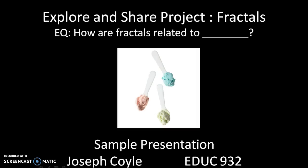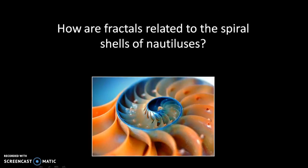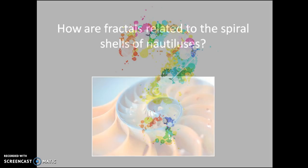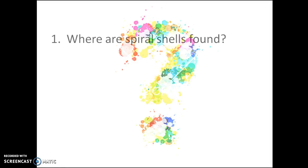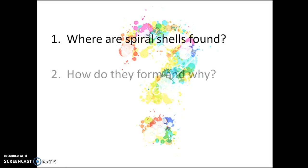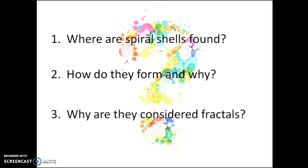It is your job to fill in the blank. One of the coolest creatures in the world is the Nautilus, because of its unique spiral shell. The spiral shell is one of the many examples of fractals found in nature. My essential question is: how are fractals related to the spiral shells of Nautiluses? I felt the best way to answer this was to break it into three smaller questions: Where are spiral shells found? How do they form and why? Why are they considered fractals?